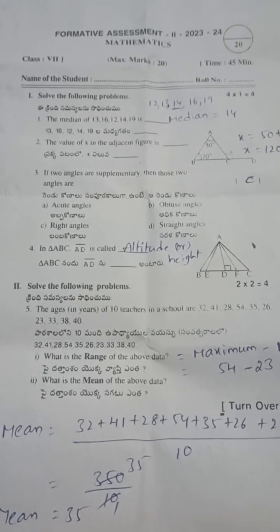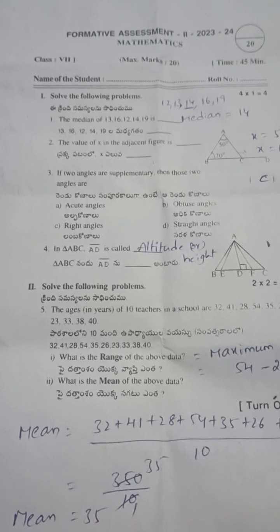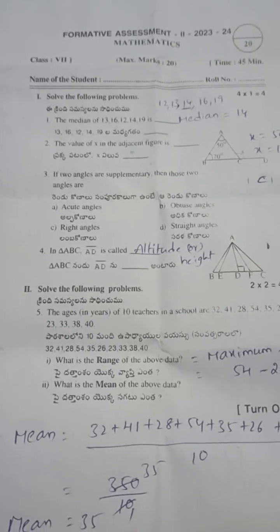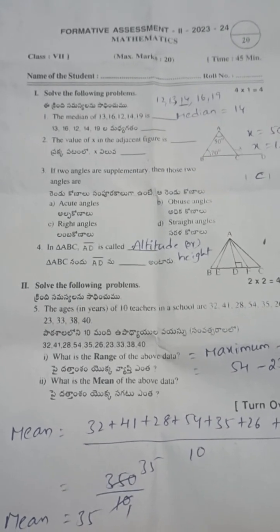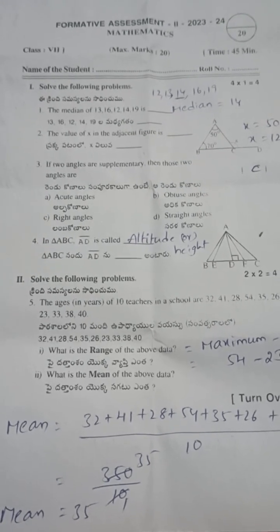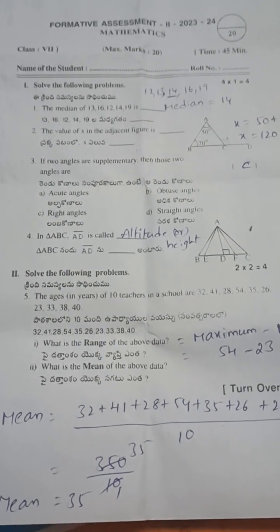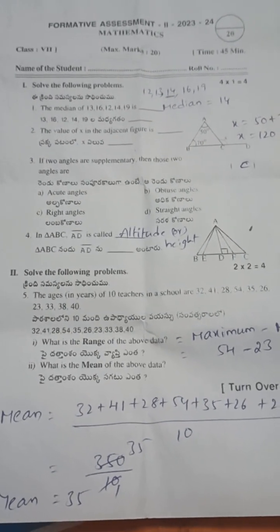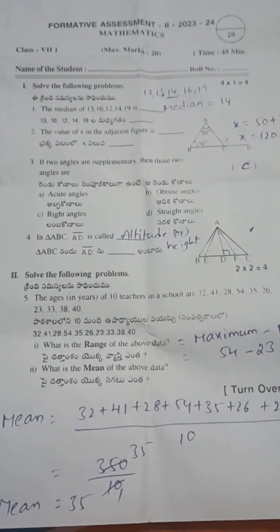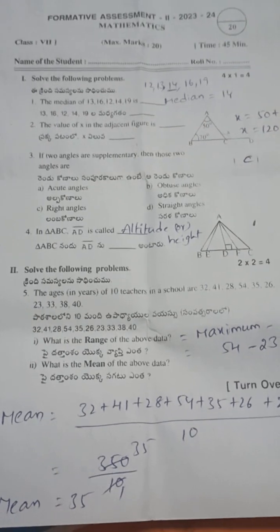Hi, we discuss today FA2 math exam class 7th. First of all, the median of the data 13, 16, 12, 14, 19. The data we can arrange in ascending order: 12, 13, 14, 16, 19. If the data has n odd observations, the median is (n+1)/2. So n is 5, 5+1 by 2, that is 6 by 2, that is third term. So here what is the third term? 14.